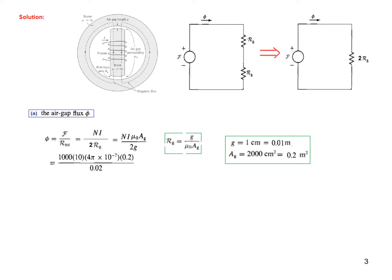So number of turns is 1000, current 10 ampere, 4π×10⁻⁷ is the permeability of air, and area is two thousand centimeters equals 0.2 meter square, and g one centimeter means 0.01 meter multiplied by 2 becomes 0.02. And so we find out φ to be 0.13 Weber.